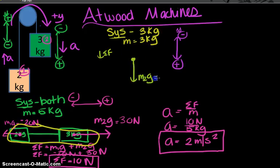This means that my m2g vector, which I know to be 30 newtons, is longer than the tension force, and I don't know what the tension force is.